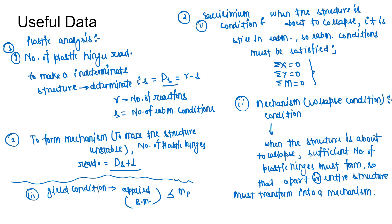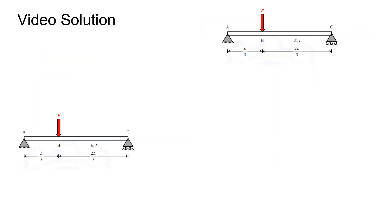If all three conditions — equilibrium, mechanism, and yield — are satisfied, we get a unique load called the collapse load at which the structure or beam fails. Now coming to the video solution part to find the plastic moment mp. The first method we will use is the static method.